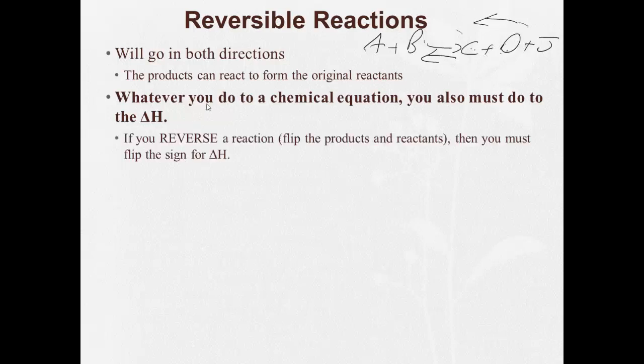And when we practice with the heat energy on the reference table, you're going to see when we reverse a reaction, flip the products and reactants around, you must also flip the sign for delta H. So if the delta H is negative on the forward reaction, that means delta H will be positive on the reverse reaction.